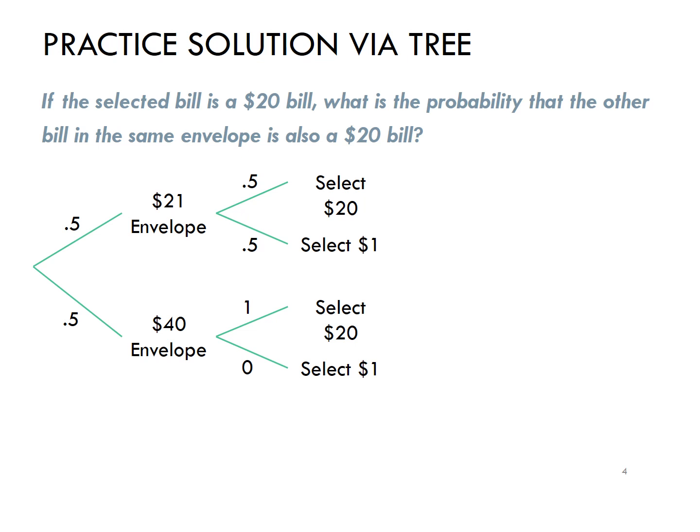Fill in your table by multiplying along our branches to find those AND probabilities.